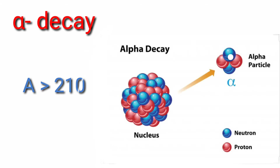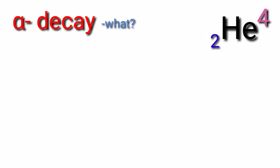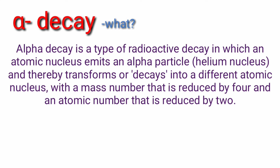Alpha decay occurs in atoms or nuclei whose atomic mass is greater than 210. An alpha particle is nothing but a helium nucleus, which has atomic number 2 and atomic mass 4. Alpha decay is a type of radioactive decay in which an atomic nucleus emits an alpha particle — a helium nucleus — and thereby transforms into a different atomic nucleus with mass number reduced by 4 and atomic number reduced by 2.